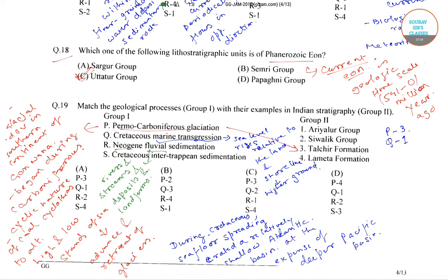So the only thing left is Cretaceous Intra-trappean Sedimentation and corresponding to it, it would be Lameda Formation. So the correct answer is option number A.